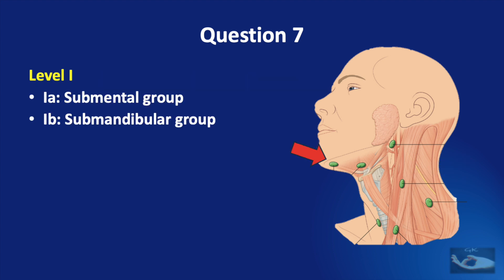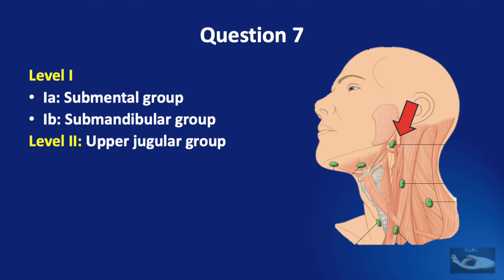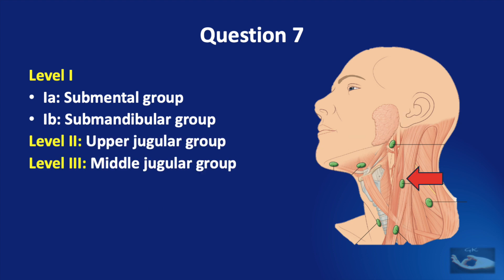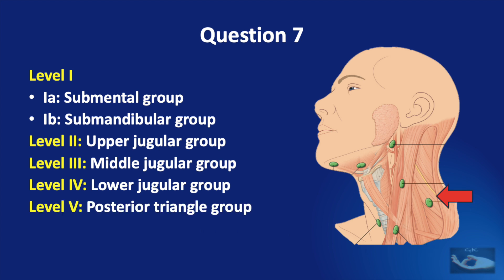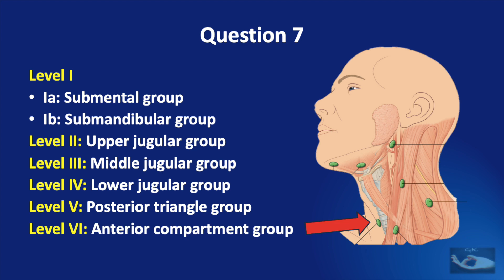Among the cervical lymph nodes, level 1a corresponds to the submental group, level 1b corresponds to the submandibular group, level 2 is the upper jugular group, level 3 the middle jugular group, and level 4 the lower jugular group. The posterior triangle group represents level 5 and the anterior compartment group represents level 6.